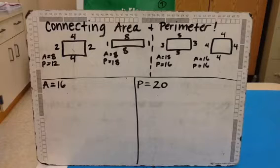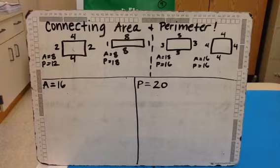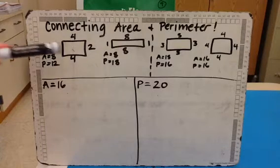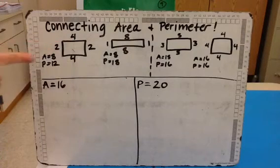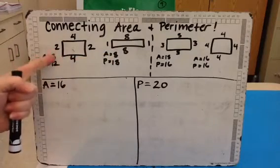In this video, we are going to be looking at the connection between area and perimeter, and we're going to be noticing that there are times when two rectangles can have the same area, like these two, both have an area of 8.